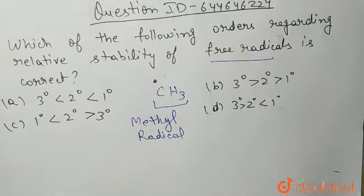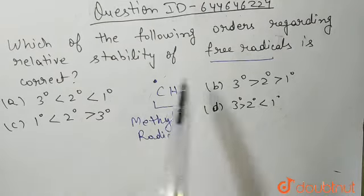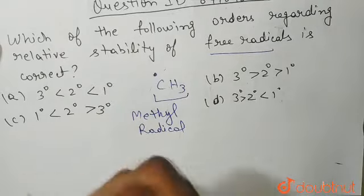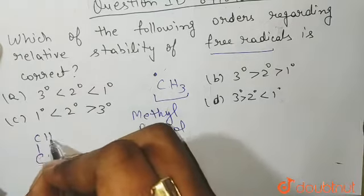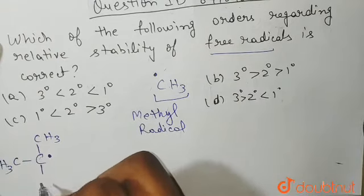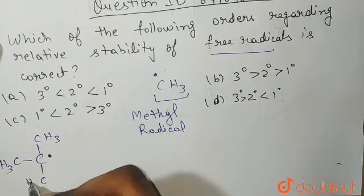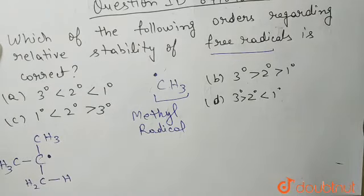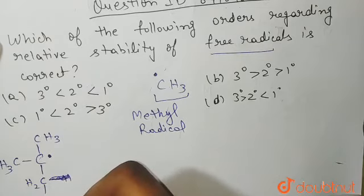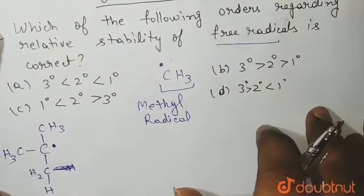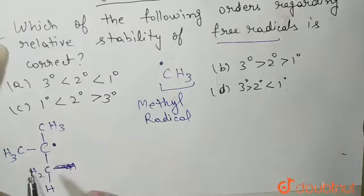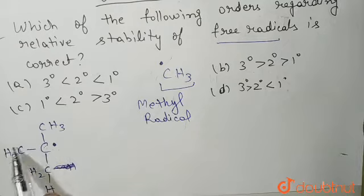Our radicals can be tertiary, secondary, or primary. A tertiary radical is a radical where the carbon carrying the radical is directly attached to three other carbon atoms.